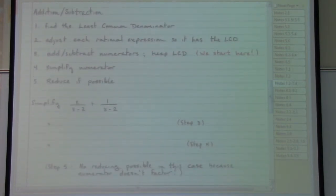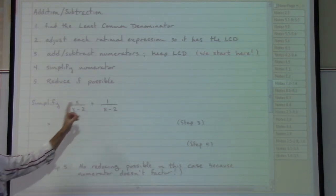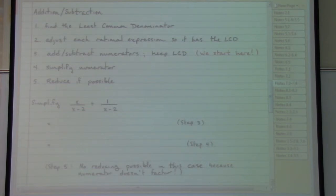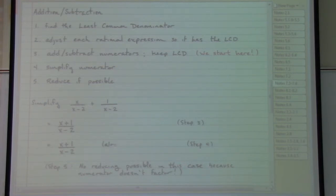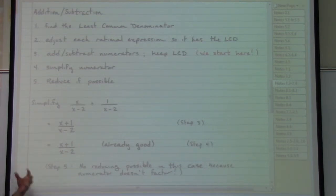Let's take a look at a first example. We already have in both fractions the same denominator of x minus 2, which means we can begin right away with adding our numerators together and keeping the denominator the same. Step four says we need to simplify — there's no simplifying that needs to take place, so we're already good. Looking at the numerator and denominator, they can't be factored into identical factors, so there is no reducing that is possible.